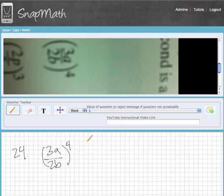What we want to do is get rid of the parentheses. It's going to be 3a to the fourth over 2b to the fourth, which is equal to that.